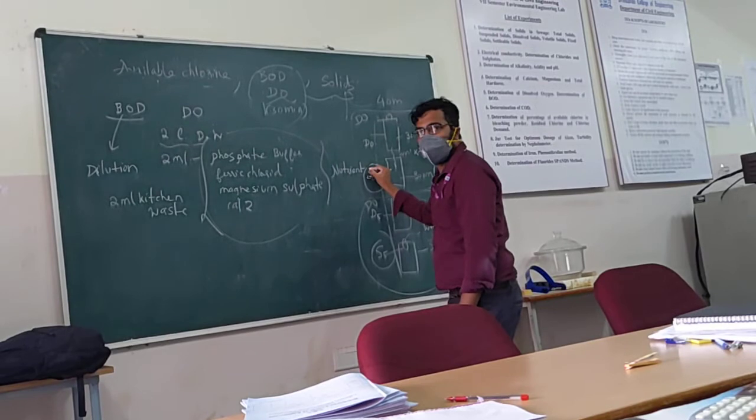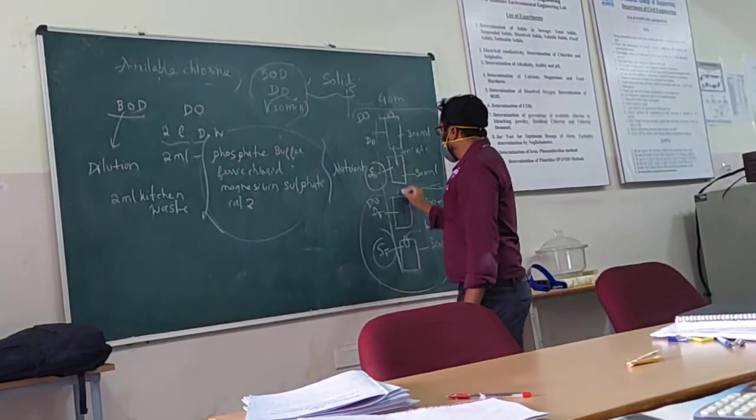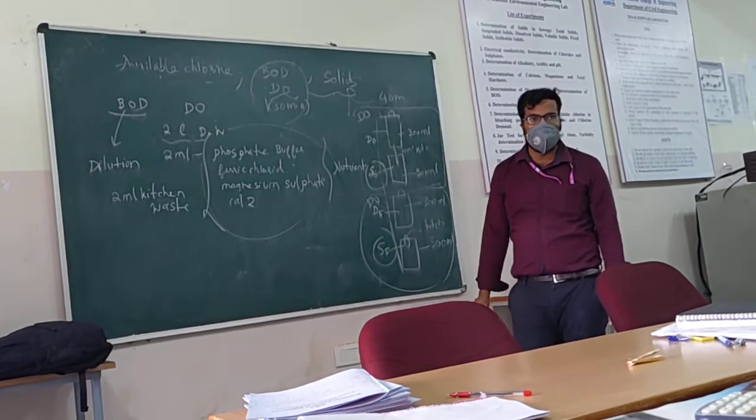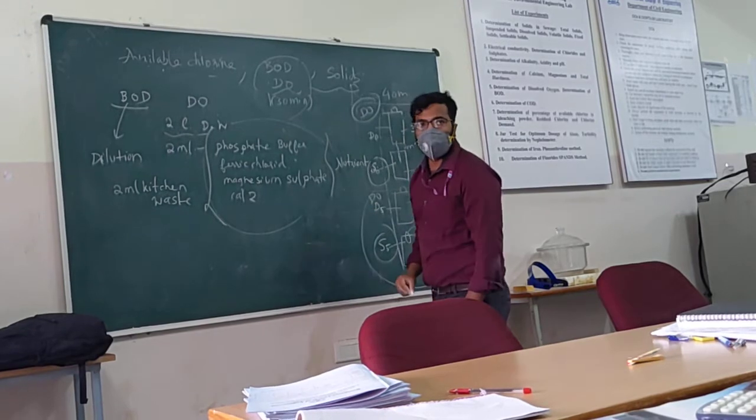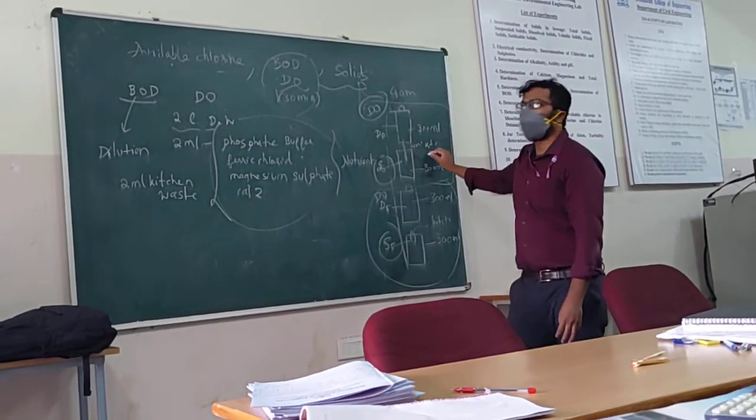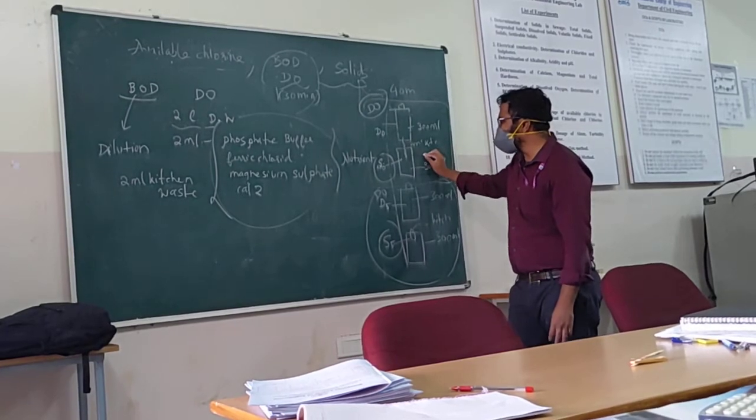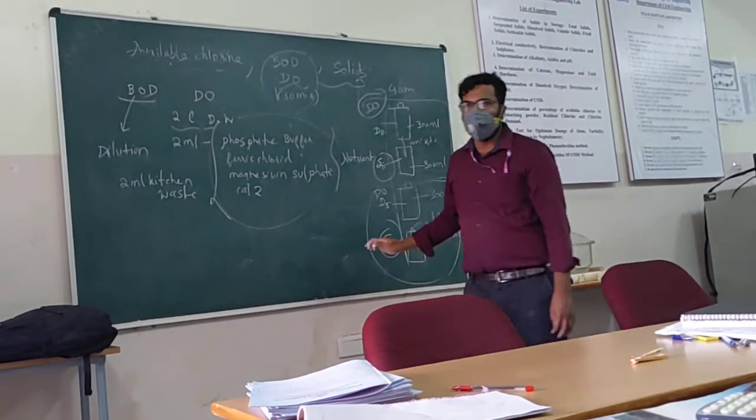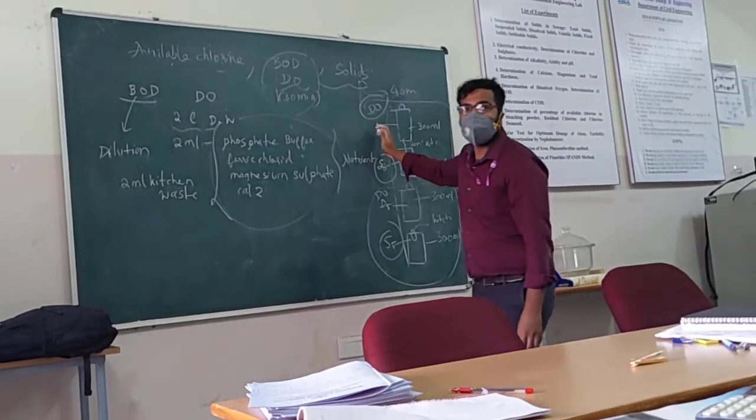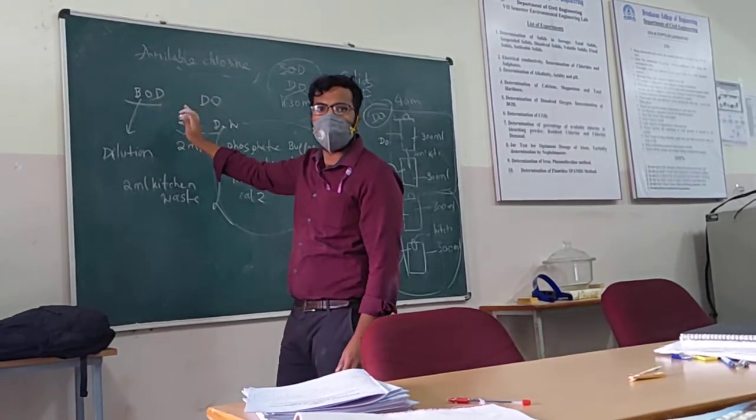And for S, whatever S I have written, for this S bottles, I will add 2 ml of the sewage waste. So after this, I will just conduct the DO, dissolved oxygen, for these 2 bottles. And I will note down the reading. And after 5 days, I will again conduct the DO. So from the difference in the oxygen level, we can calculate.